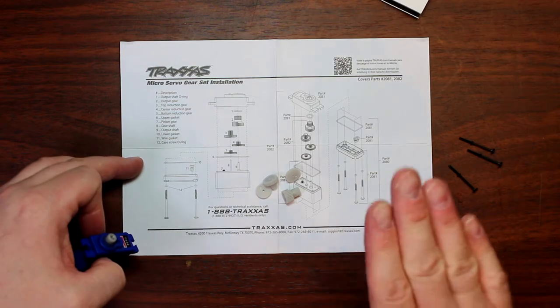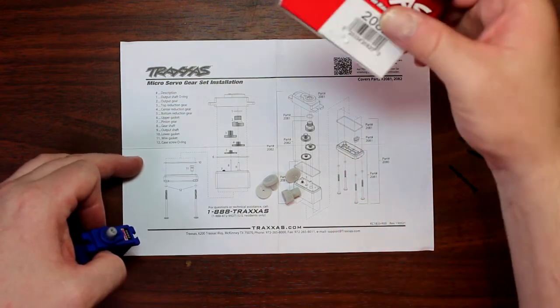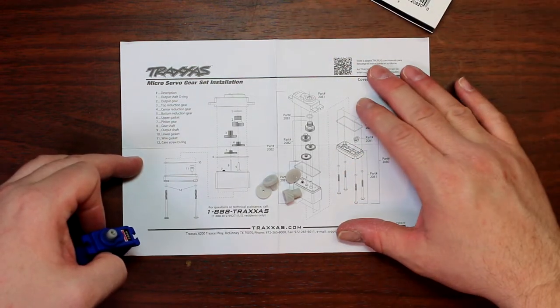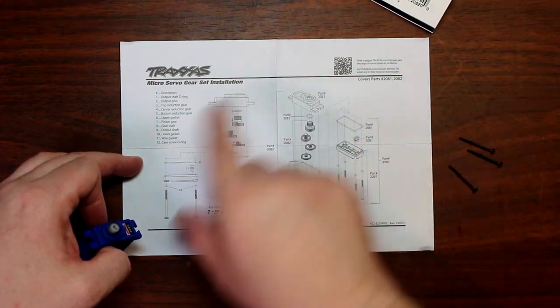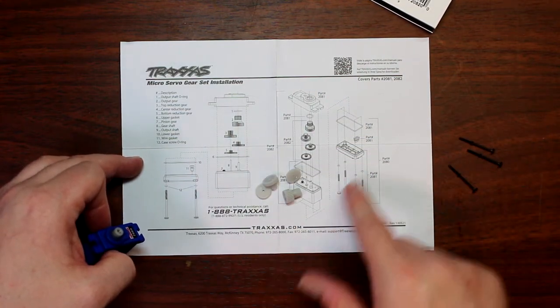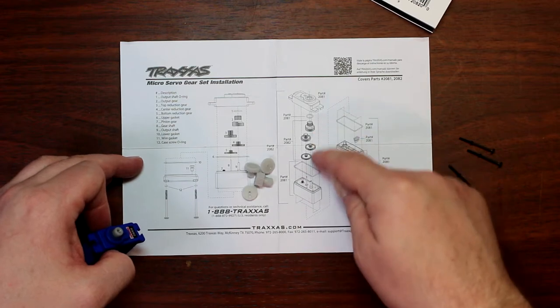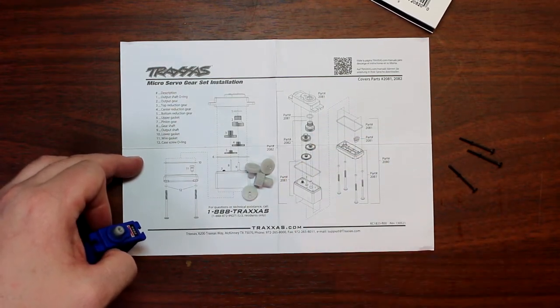Now one of the things I would suggest is the gear set comes with instructions like this right here. Take the time and read them. They show you exactly how the gears go together and exactly where on the servo itself.